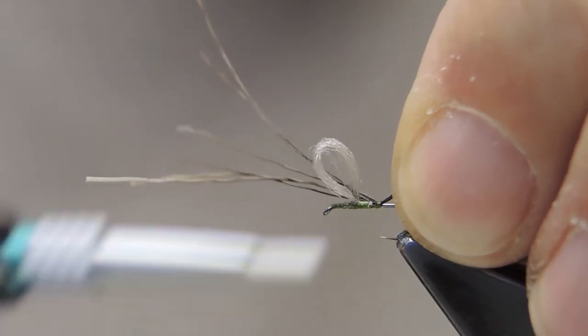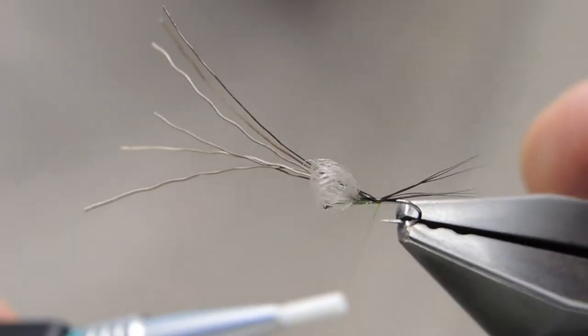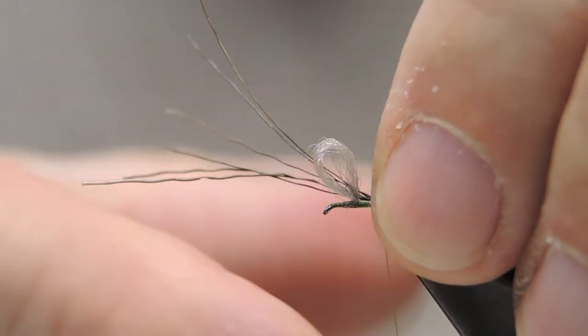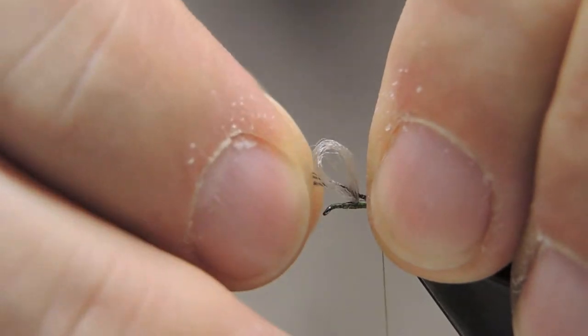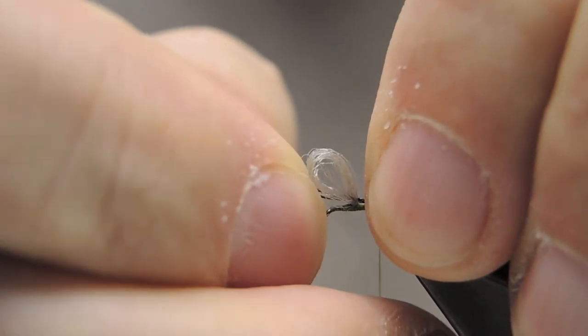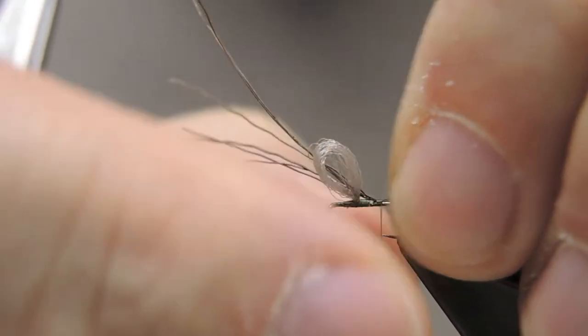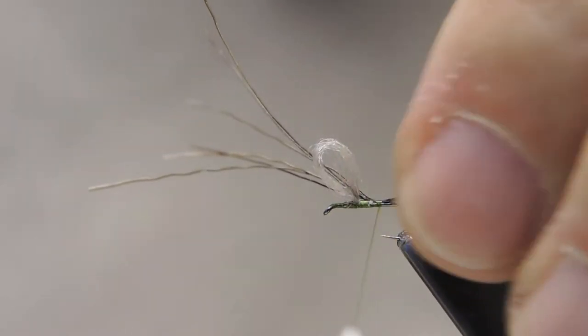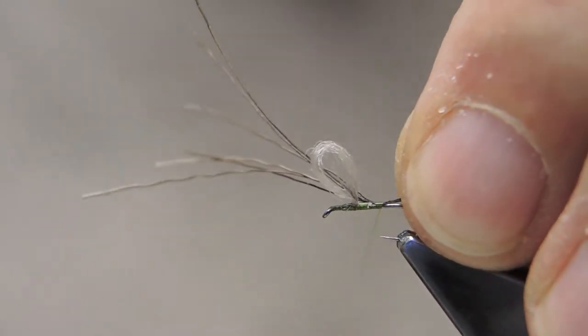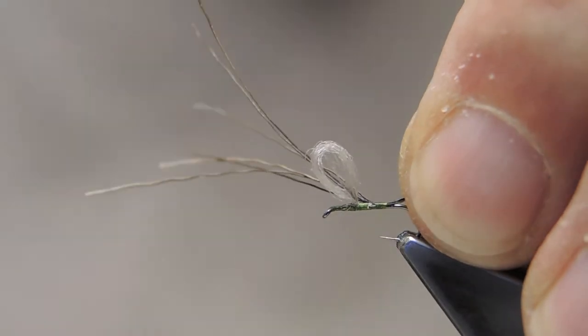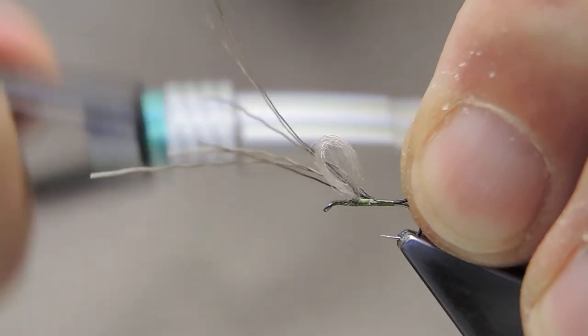Tie it down. Tail length will be about the length of the body. Keeping the hair on top, just wrap the thread to the end of the shank.